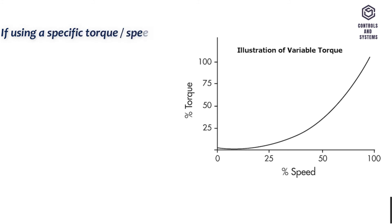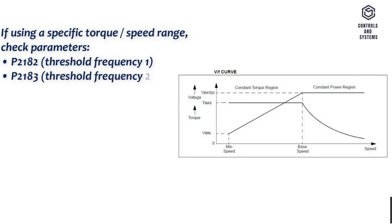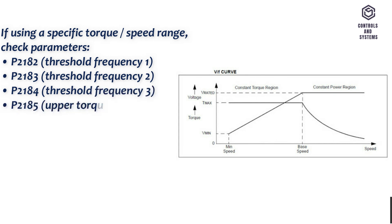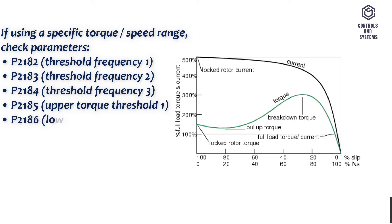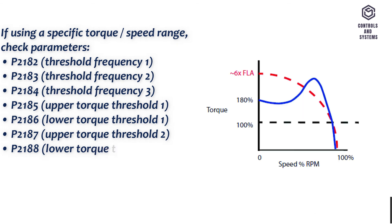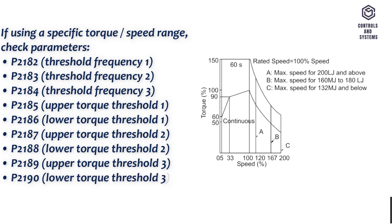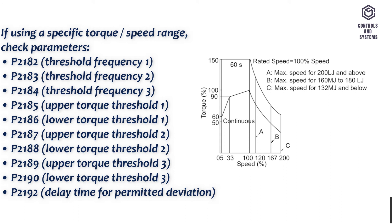If using a specific torque-speed range, check parameters: P2183 — threshold frequency F2; P2184 — threshold frequency F3; P2185 — upper torque threshold F1; P2186 — lower torque threshold F1; P2187 — upper torque threshold F2; P2188 — lower torque threshold F2; P2189 — upper torque threshold F3; P2190 — lower torque threshold F3; P2192 — delay time for permitted deviation.